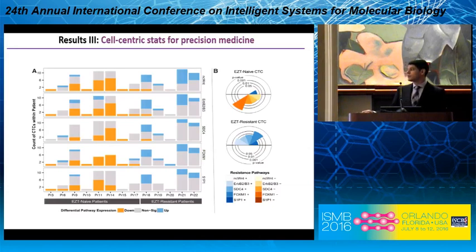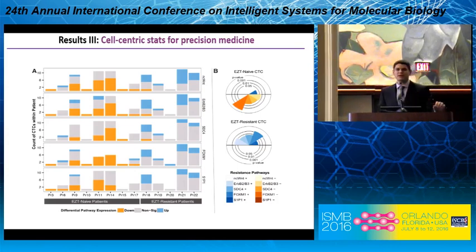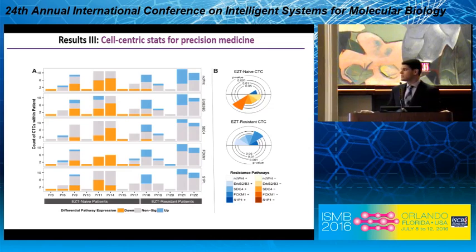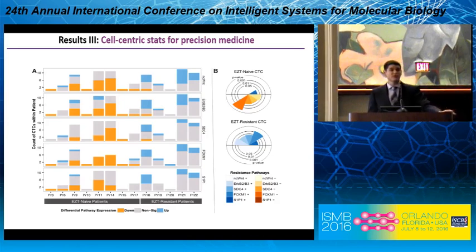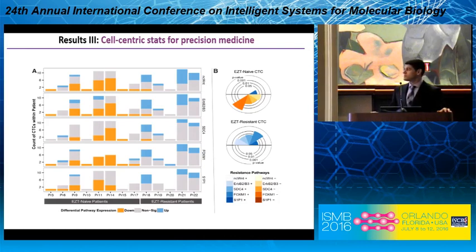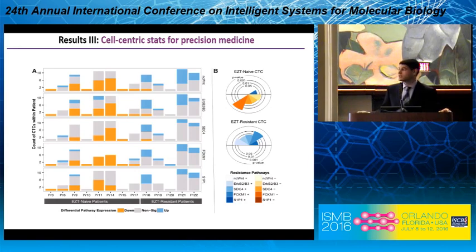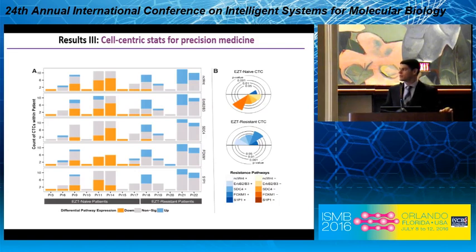Applying this to the CTC data: panel A shows 13 patients whose CTCs were sequenced — 8 naive patients on the left, 5 resistant on the right. A pathway can be up, down, or not significantly different when comparing the two phenotypes, represented by the color coding — orange for down, blue for up. The CTC count per patient on the y-axis varies from 1 to 12. Patient 3, with only a single CTC, shows four of the five pathways underexpressed, suggesting sensitivity to treatment. Patient 9 shows much more intratumoral heterogeneity, with many pathways overexpressed even above the resistant phenotype, suggesting a propensity to resist treatment.